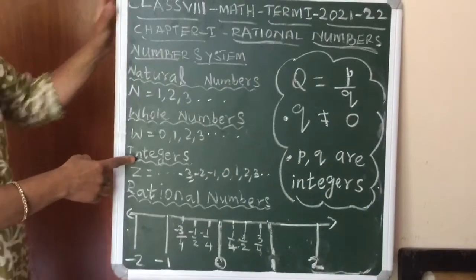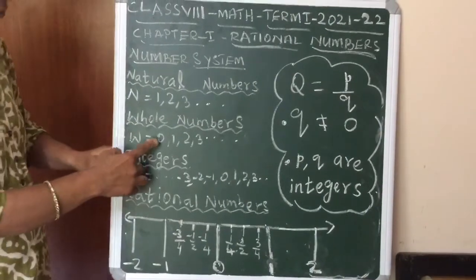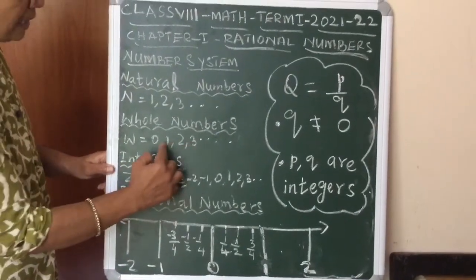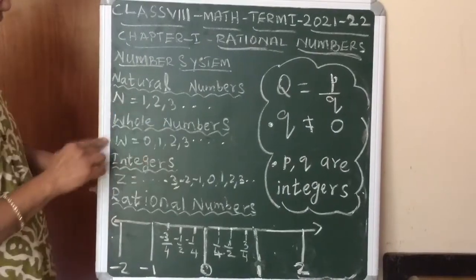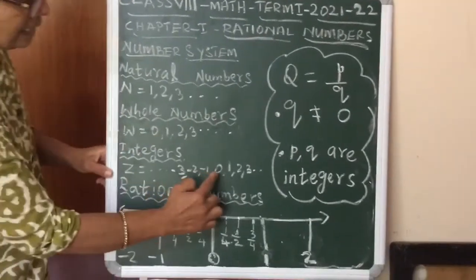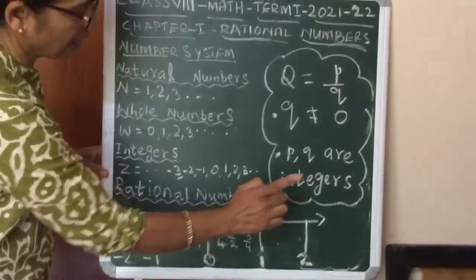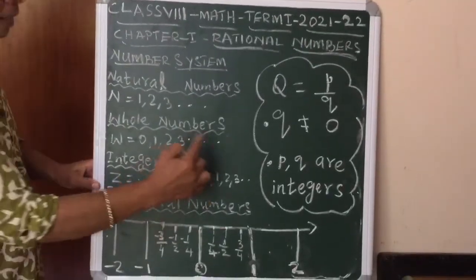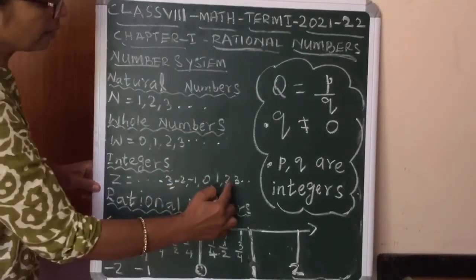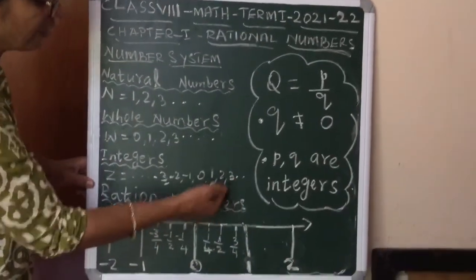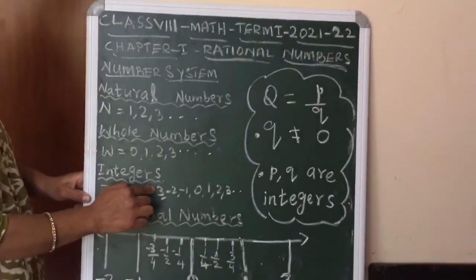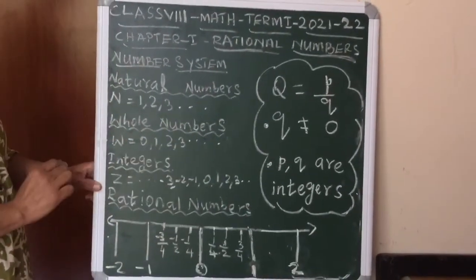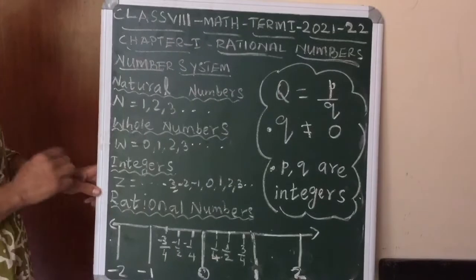Next, we studied integers. For all whole numbers on the right-hand side of 0, we included their negative counterparts on the left-hand side: +1, +2, +3 on the right and -1, -2, -3 on the left. This complete set of numbers together is called integers, denoted by Z.